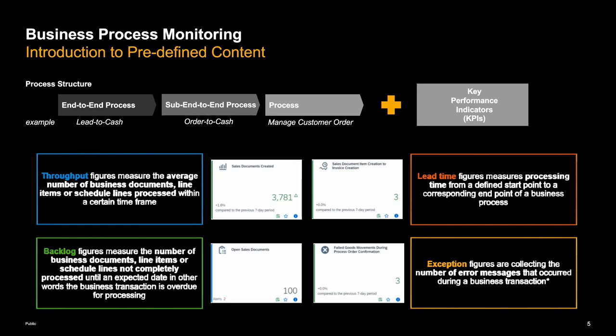The second type is a backlog KPI — for example, open sales documents not yet in a final state, where some action is required. A large backlog can be good or critical depending on the resources available. Third is the exception KPI, collecting error situations such as failed goods movements during process order confirmation. Last is the lead time — an indicator of process health, such as how long from order creation until the invoice is sent.